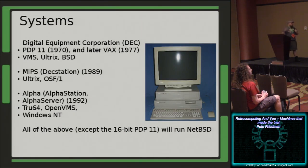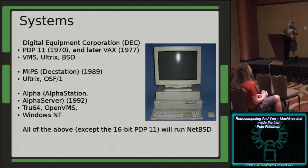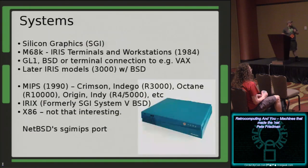Digital Equipment Corporation had the PDP-11, and later the VAX - Virtual Address Extensions - basically a 32-bit extension to the VAX architecture. They also had some machines based on the MIPS architecture; Ultrix and OSF/1 were the operating systems that shipped with those. And then later on, the Alphas. For the most part, with the exception of the 16-bit PDP-11, they'll all run a modern version of NetBSD, so you can get these up and running and play around with them.